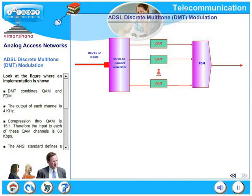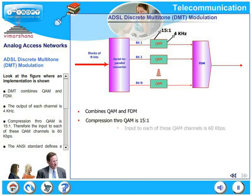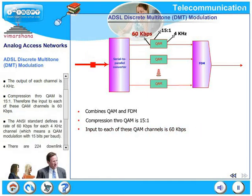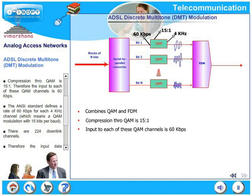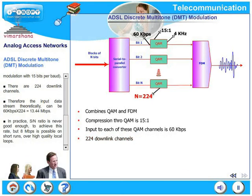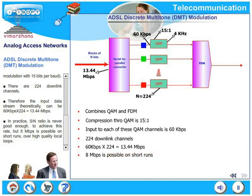Look at the figure where an implementation is shown. DMT combines QAM and FDM. The output of each channel is 4 kilohertz, and compression through QAM is 15 to 1. Therefore, the input to each QAM channel is 60 kilobits per second. The ANSI standard defines a rate of 60 kilobits per second for each 4-kilohertz channel, meaning a QAM combination with 15 bits per baud is utilized. There are 224 downlink channels, so the input data stream can theoretically be 60 kilobits × 224 = 13.44 Mbps. In practice, 8 Mbps is typically possible on short runs over high-quality local loops. For further details, you may refer to our advanced courses.